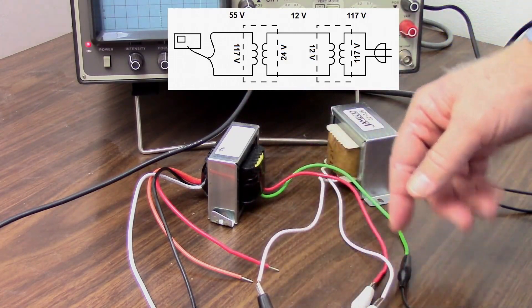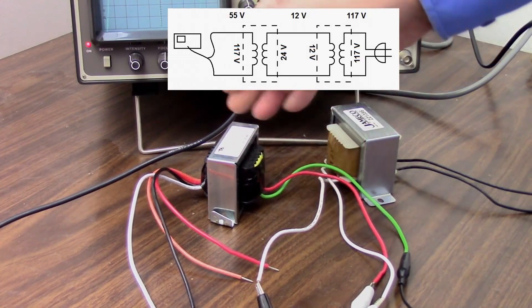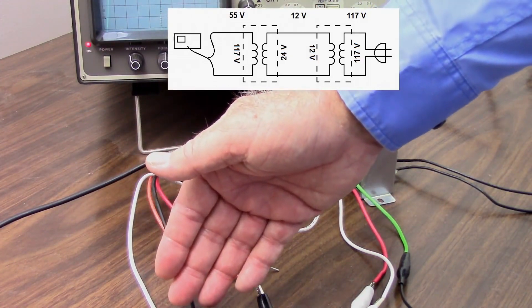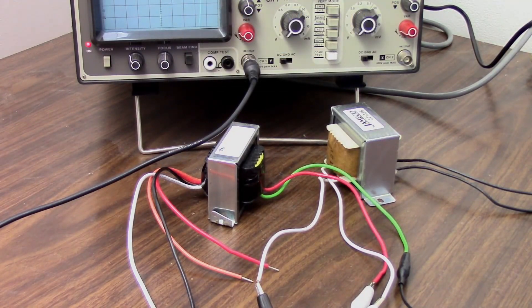I have that 12-volt secondary going to the 24-volt secondary of this transformer, and then I have my oscilloscope attached to the primary. Why would I be doing that? I'm about to demonstrate how a x10 probe works, and I need a high voltage to measure.